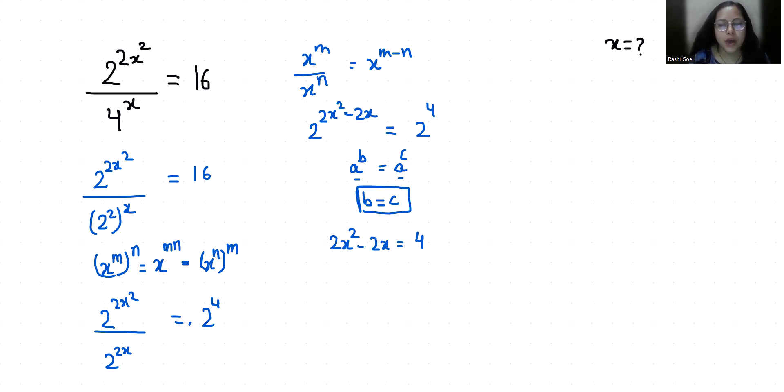So 2x square minus 2x minus 4 equals 0. If I take 2 as common, so x square minus x minus 2 equals 0.